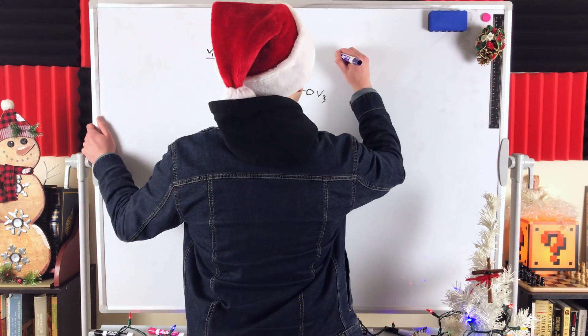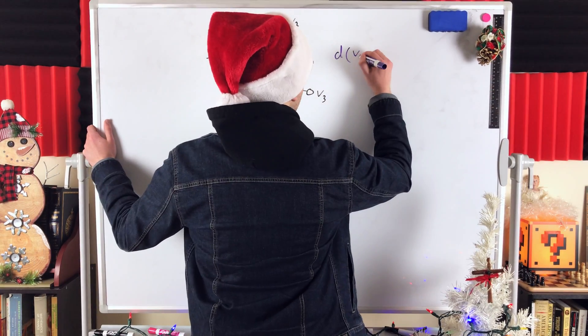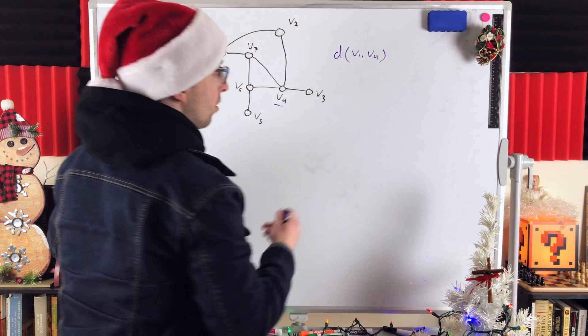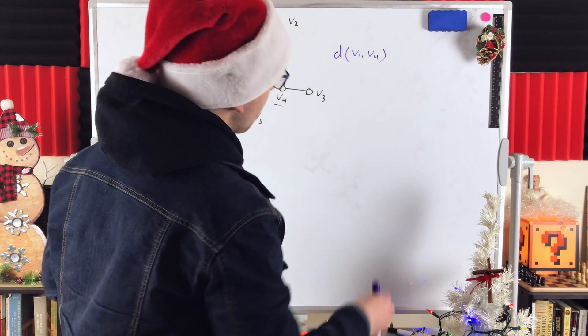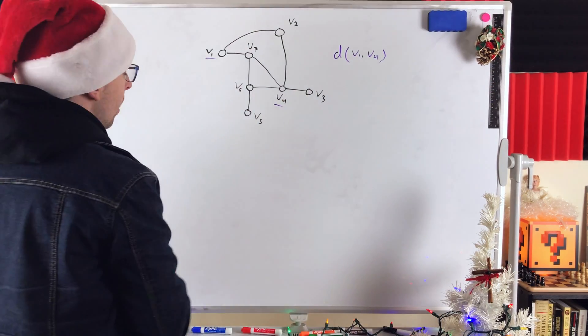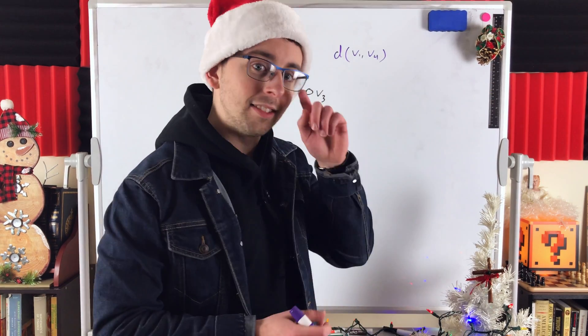So, we write it like this. Use a D for distance, very intuitive. Distance between the vertices V1 and V4. Remember, in an undirected graph, which is what we're talking about, the order you write these vertices in doesn't matter. The distance is the same. This is all you have to write if the graph you're working with is clear.